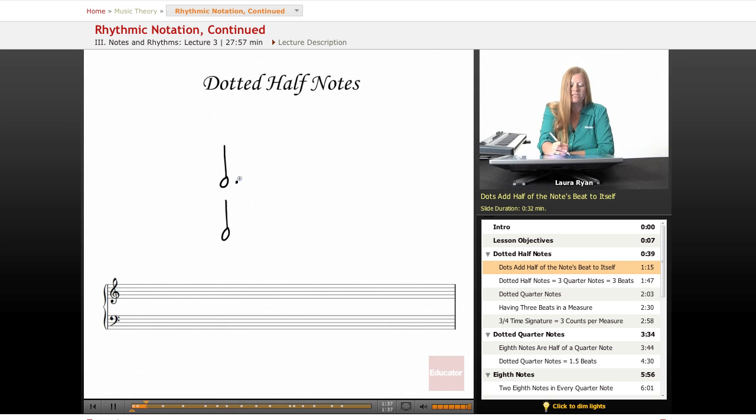What we do with this dot is we remember that this dot adds half of this beat to itself. So essentially what the dot, it's like a shorthand, it's like a symbol. It means this. In this case, we are adding the length of one quarter note to this half note because half of a half note is two quarter notes, right? So if we divide this in half, we add one quarter note.